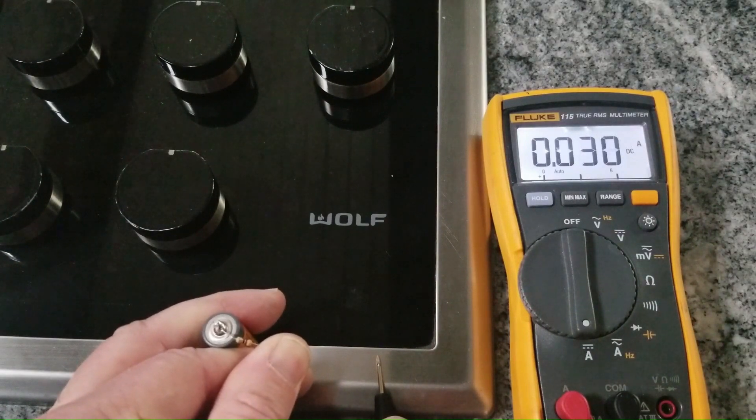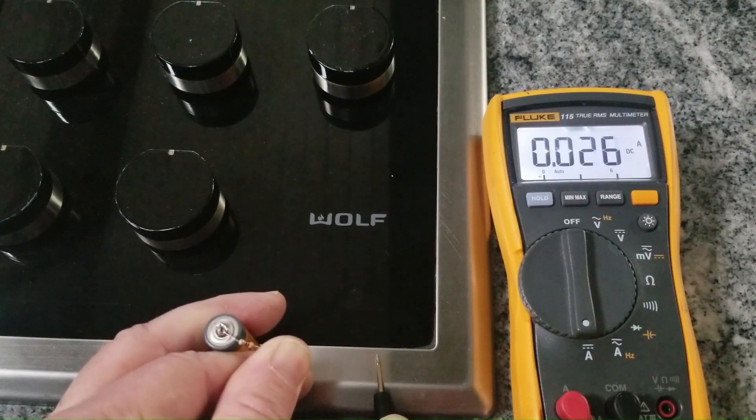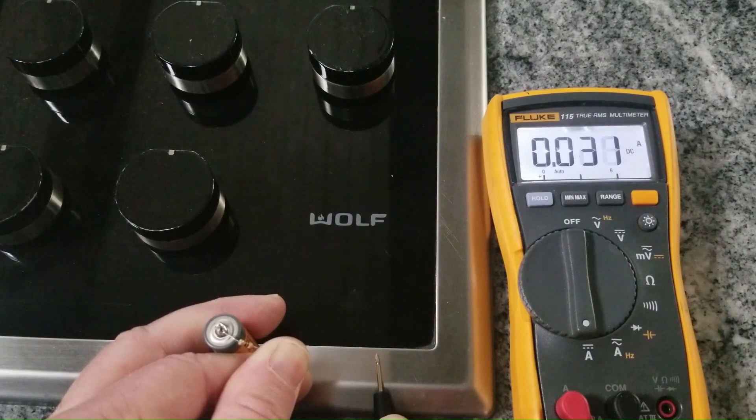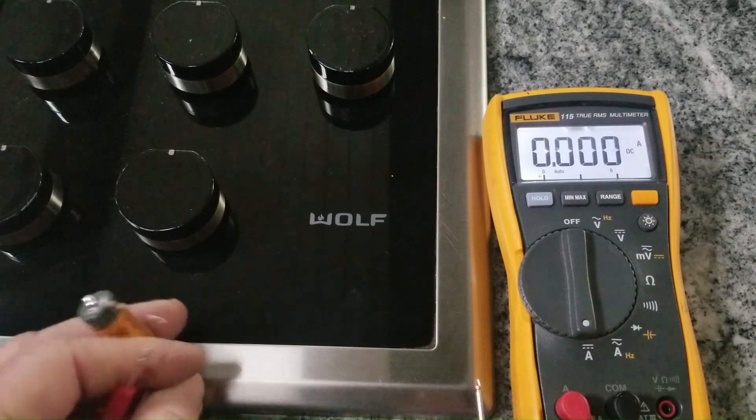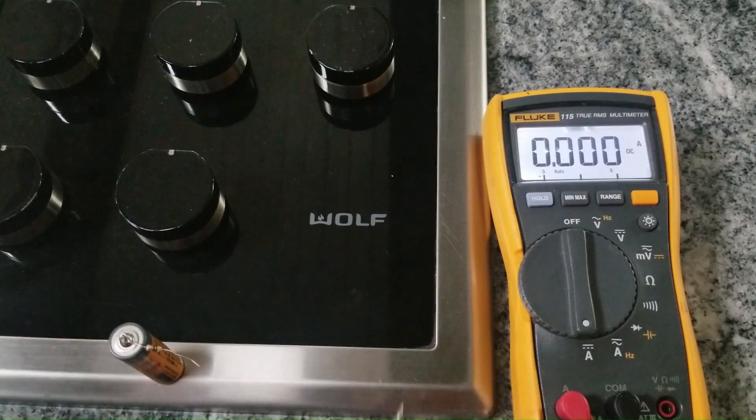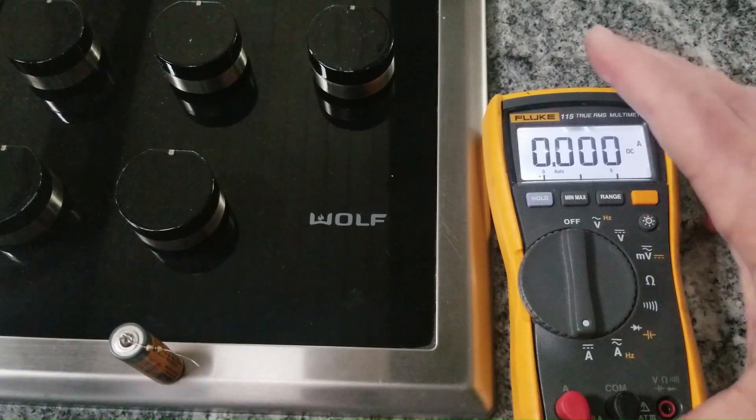Now you notice I'm still getting around 30 milliamps, but it's going through the chassis here. All right, so that current is flowing into the chassis, but why didn't it trip the GFI?